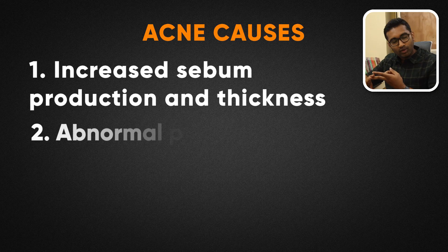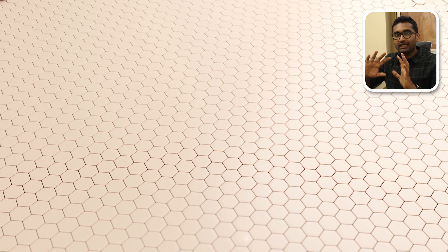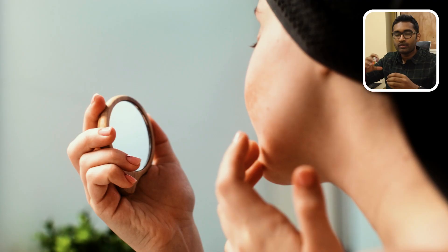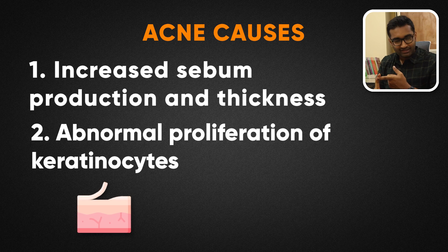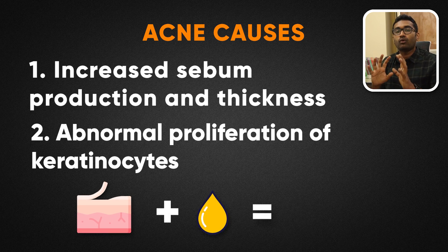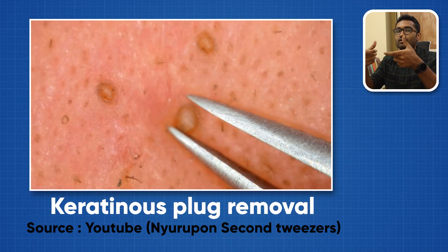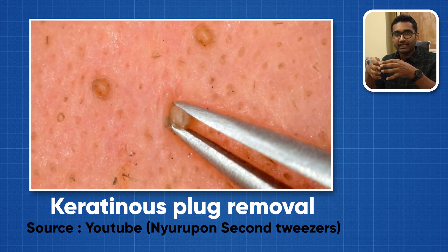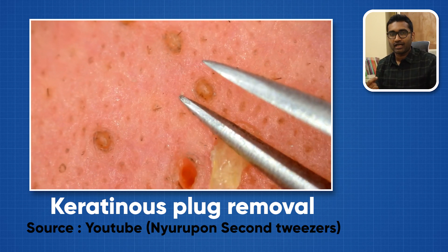Number two: abnormal proliferation of keratinocytes. Keratinocytes are skin cells. In the hair follicle, they are generally generated and shed. So the skin cells are already there, but they form a keratinous plug. Basically, the dermal follicular unit opening becomes blocked by this plug.